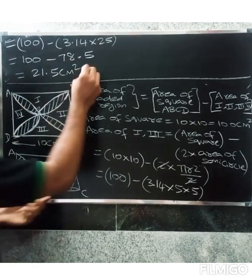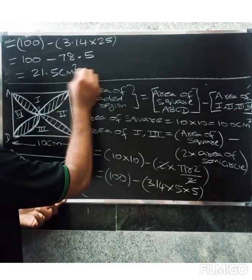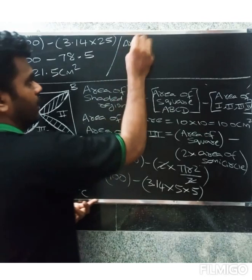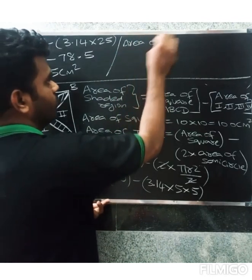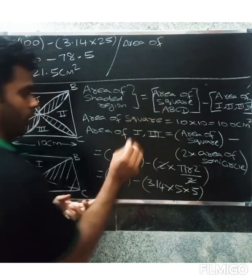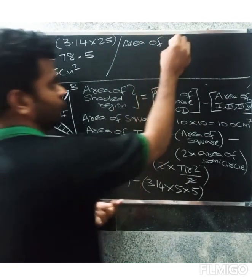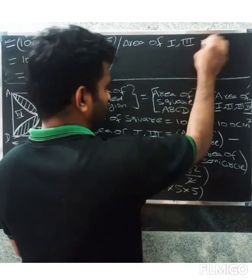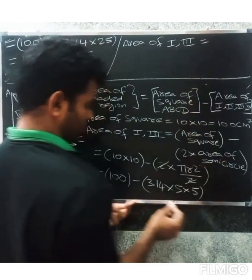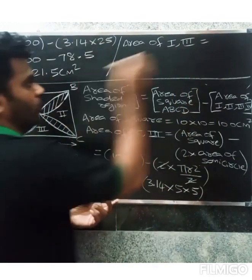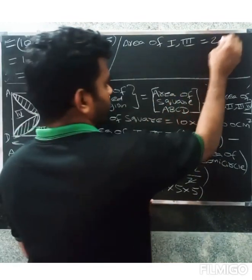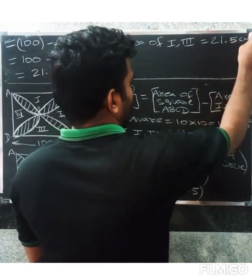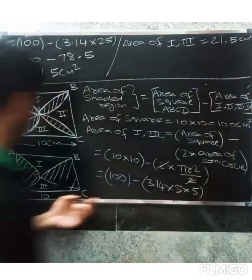So 100 minus 78.5 equals 21.5 centimeter square. The area of regions 1 and 3 equals 21.5 centimeter square.